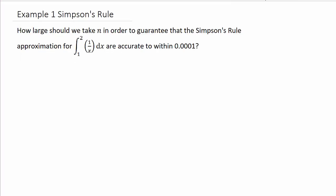Alright, so let's take a look at example one. How large should we take n in order to guarantee that Simpson's rule approximation for the integral of 1/x dx from 1 to 2 is accurate to within 0.0001? Remember for Simpson's rule, this is less than or equal to k times (b-a)^5 over 180n^4, and the fourth derivative of f(x) is less than or equal to k.